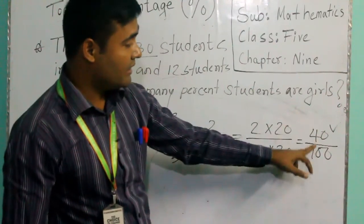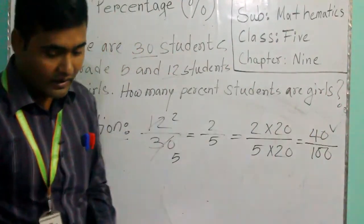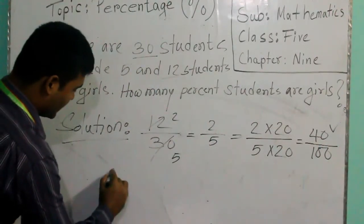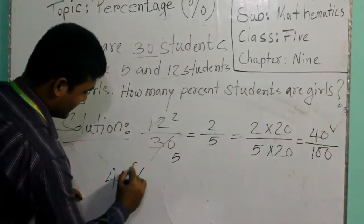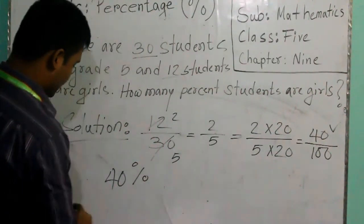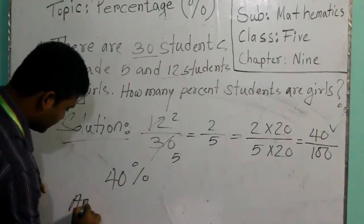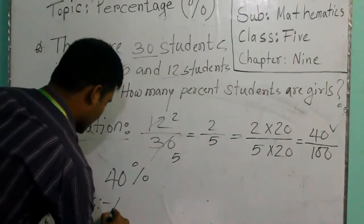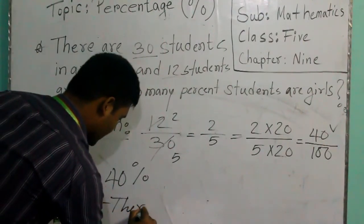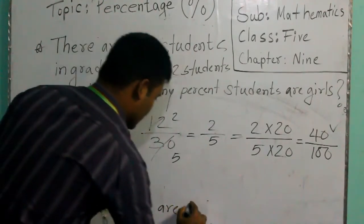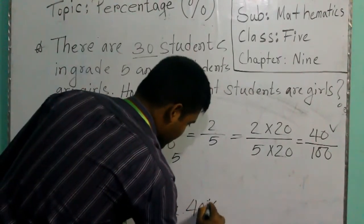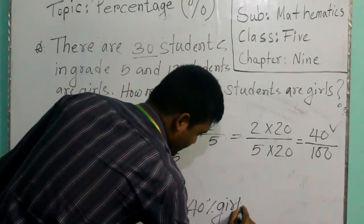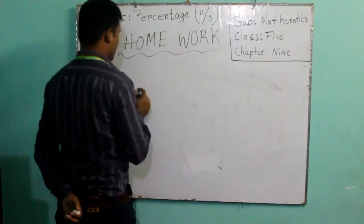How many percent did we get? This is the very easy way. Let us write here. The answer is 40 percent. We will write answer that there are 40 percent girls.